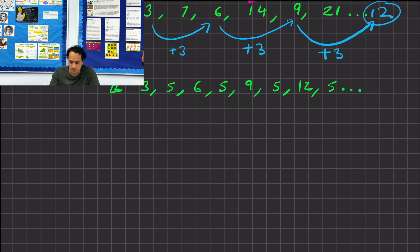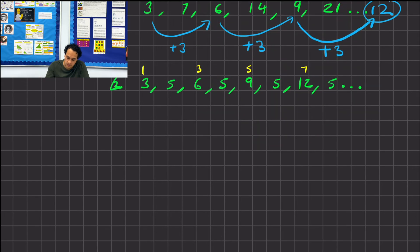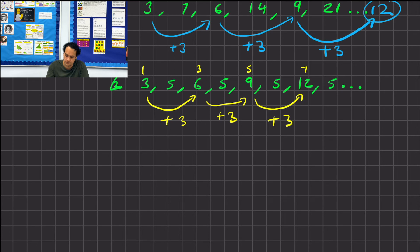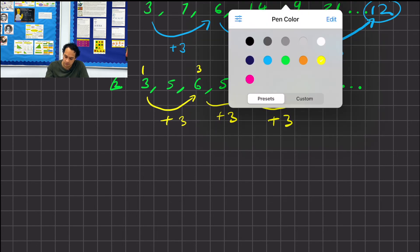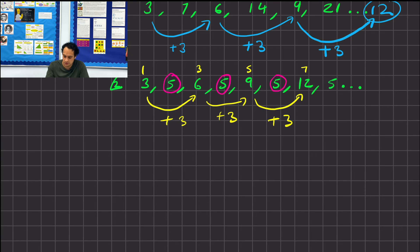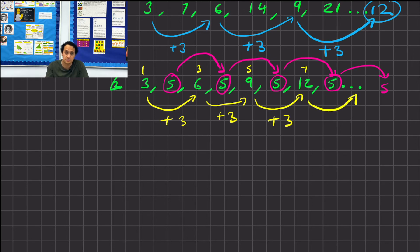Here's another two-pattern sequence: 3, 5, 6, 5, 9, 5, 12, 5. The odd-numbered terms go up in 3s: 3, 6, 9, 12. But the even-numbered terms repeat — they're all 5. So sequences can have a repeating component. The next term will be 5, and then the 9th term will be 15 (adding 3 to 12).